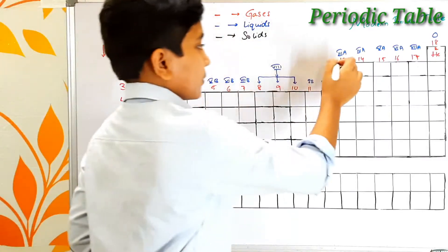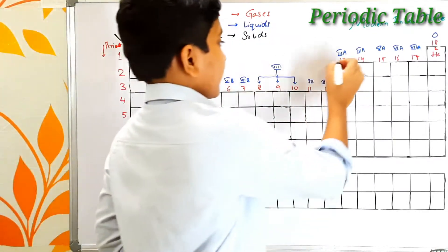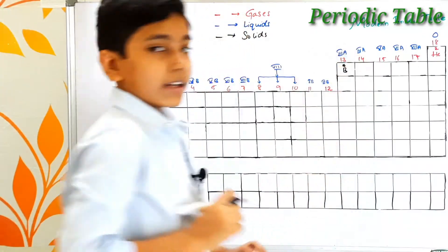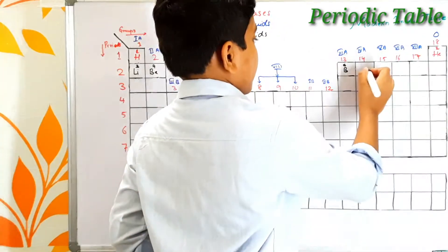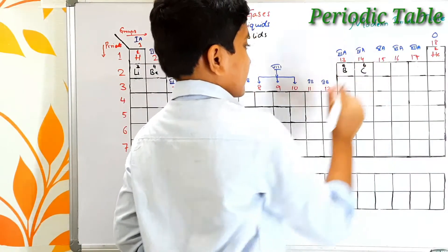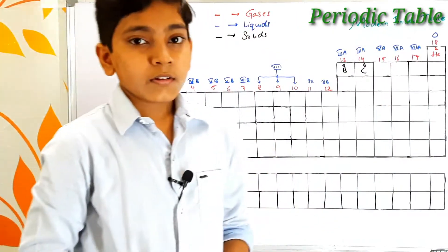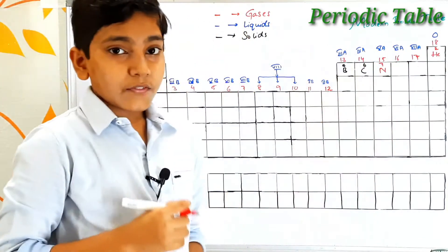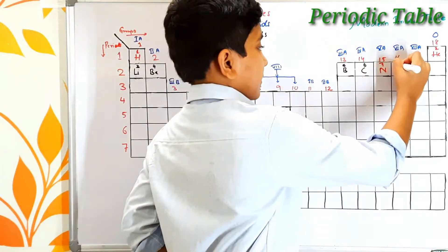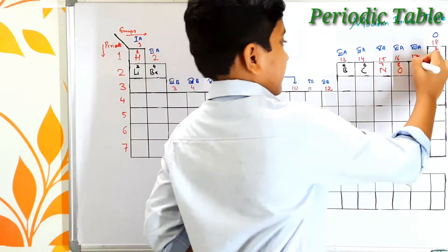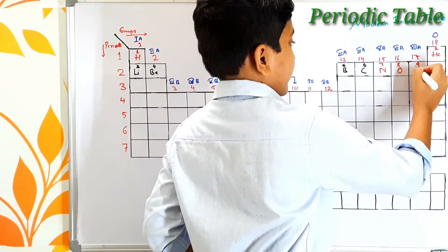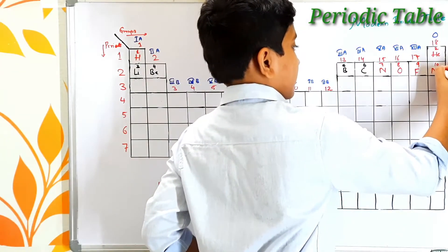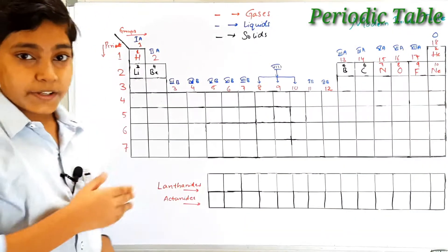Coming to the 3A group, we find boron — its atomic number is 5 and its symbol is B. Next we find carbon — its atomic number is 6 and its symbol is C. After carbon, atomic number 7 is nitrogen, atomic number 8 is oxygen, atomic number 9 is fluorine, and atomic number 10 is neon.